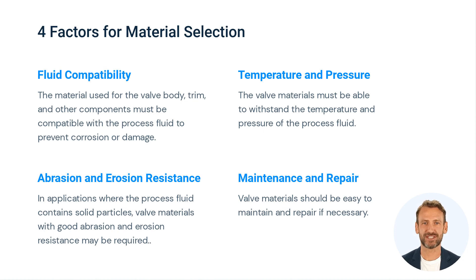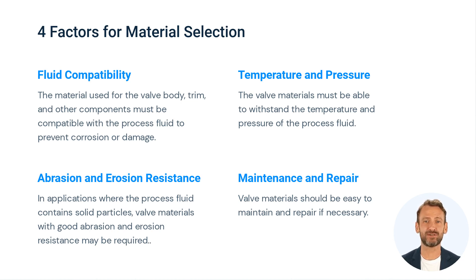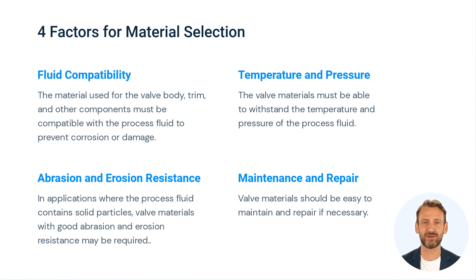Additional material factors include abrasion and erosion resistance — in applications where the process fluid contains solid particles, valve materials with good abrasion and erosion resistance may be required. Valve materials should also be easy to maintain and repair if necessary. Common control valve materials include stainless steel, carbon steel, cast iron, bronze, and plastic. The specific material used will depend on the process requirements and compatibility with the process fluid.